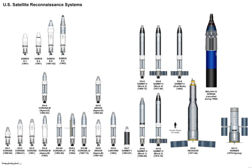President Lyndon B. Johnson told a gathering in 1967: 'I wouldn't want to be quoted on this — we've spent $35 or $40 billion on the space program. And if nothing else had come out of it except the knowledge we gained from space photography, it would be worth ten times what the whole program has cost. Because tonight we know how many missiles the enemy has and, it turned out, our guesses were way off. We were doing things we didn't need to do, building things we didn't need to build, harboring fears we didn't need to harbor.'